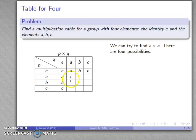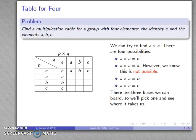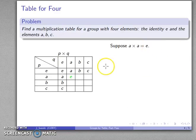The next thing we want to do is find what A times A is. There are four possibilities because we have four elements of the group. A times A could be the identity element. A times A could be A — but we know that's not true, so make sure you can prove that can't be possible. A times A might be B, and A times A might be C. That means there are three buses we can board: A×A=E, A×A=B, or A×A=C. We won't know if a bus has a flat tire until we get on it. So suppose A times A equals E.